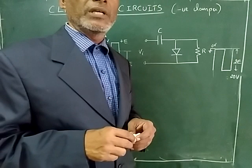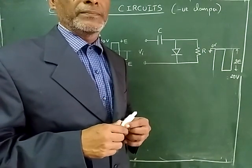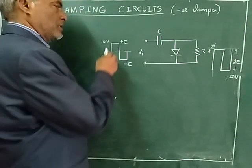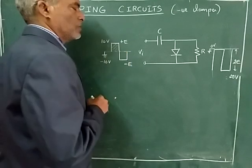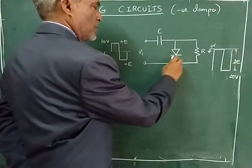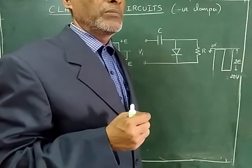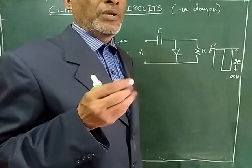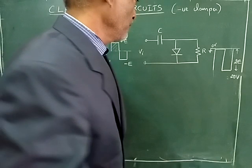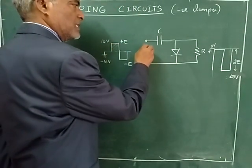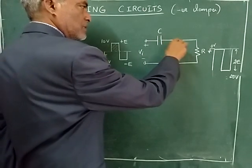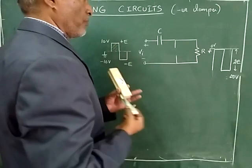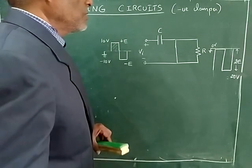If you reverse the direction of the diode, you will get a positive clamping circuit. Now, assume that during the positive half cycle, the diode is ideal — meaning no voltage drop, unlike a real diode which has 0.6V for silicon or 0.3V for germanium. During the positive half cycle, this end is positive and this end is negative, so the diode is forward biased and acts as a short circuit.